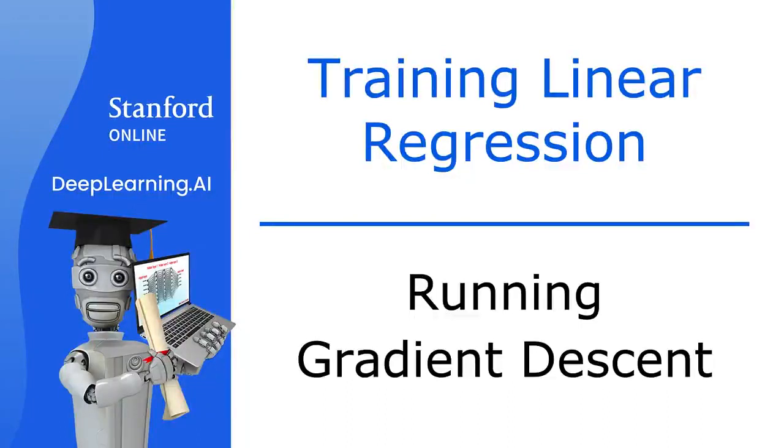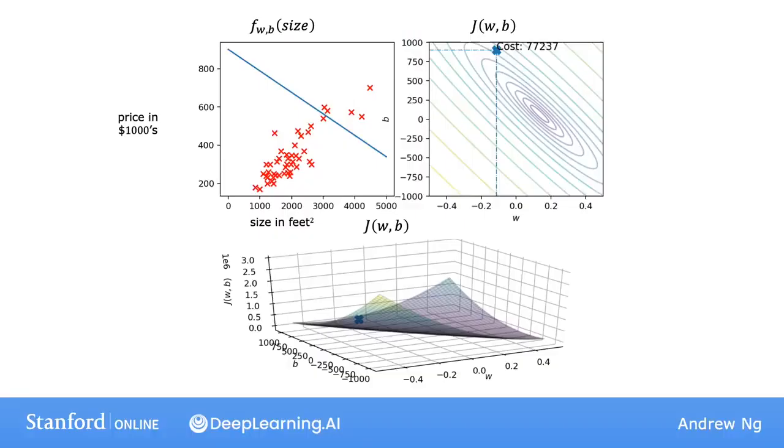Let's see what happens when you run gradient descent for linear regression. Let's go see the algorithm in action. Here's a plot of the model and data on the upper left, and a contour plot of the cost function on the upper right, and at the bottom is the surface plot of the same cost function.